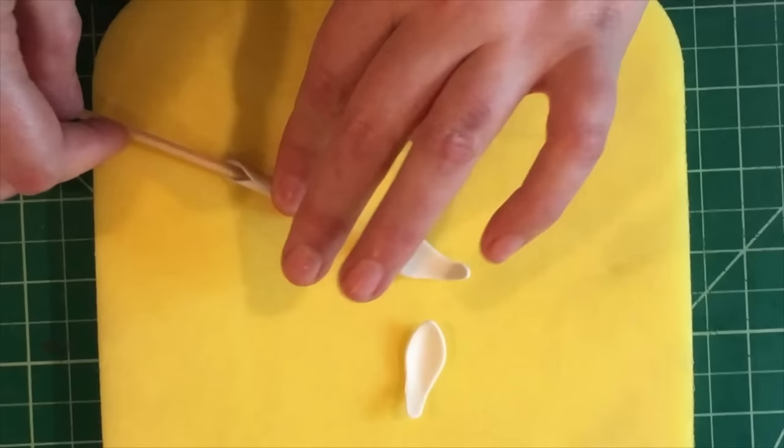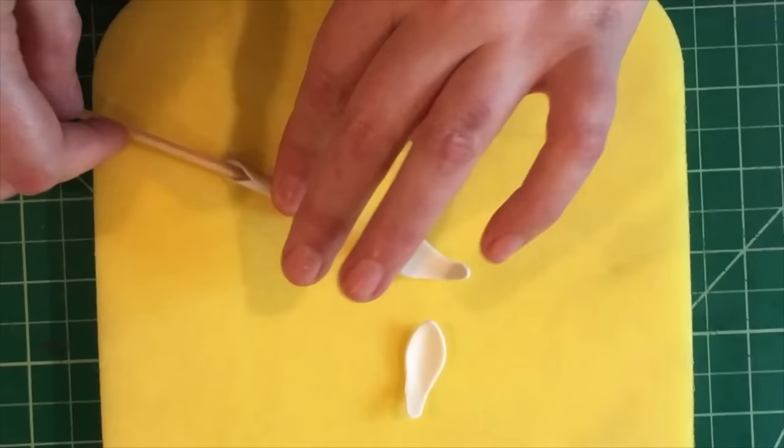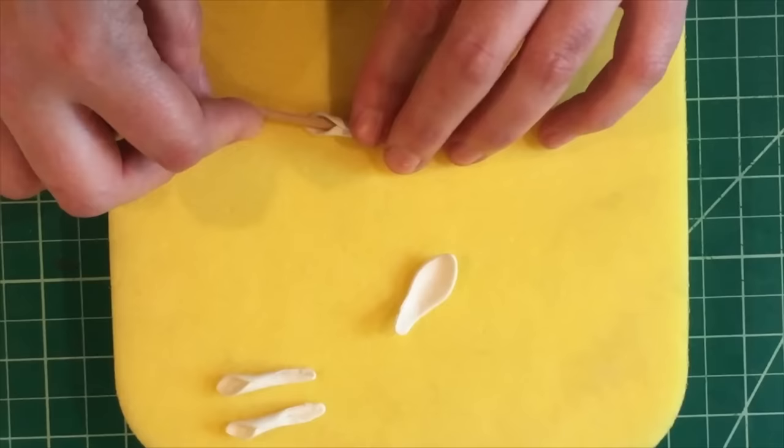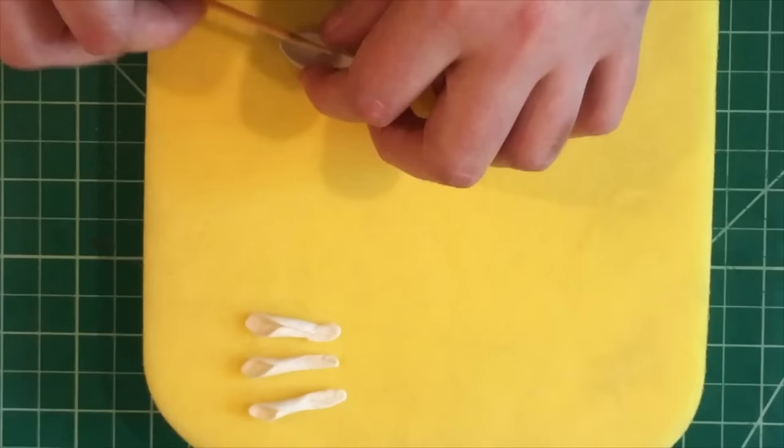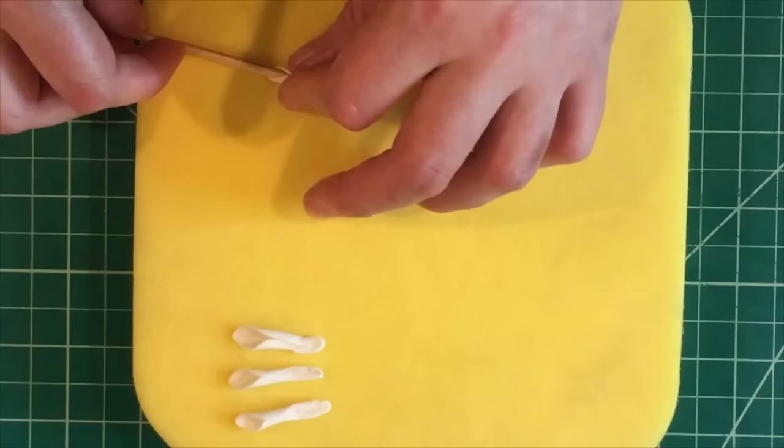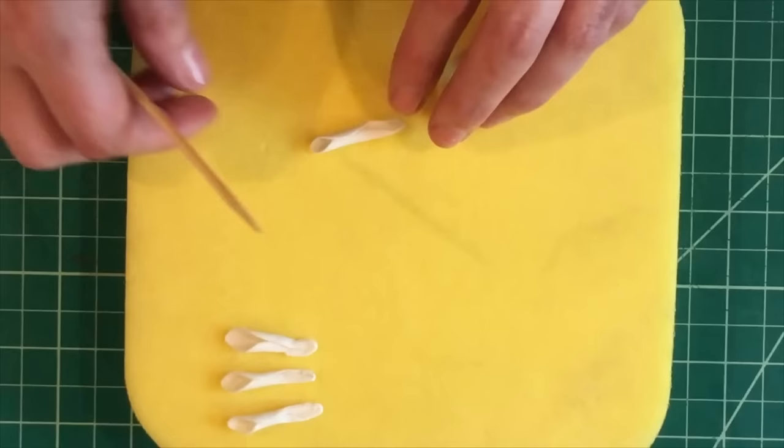And then I'm actually going to flatten the bottom with my finger. So it will attach seamlessly. So if you can see from all angles what it did. And we're going to do it again. And you can change where you roll them around your skewer to get more open petals or more closed petals. So the higher up you go, the more open they'll be.